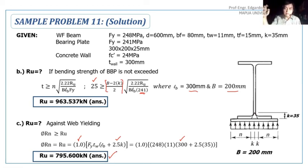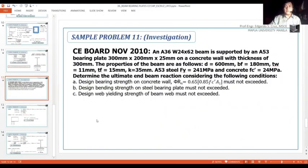These are the Ru values based from the three possible failures. If there's a question asking which is the most critical Ru among the three possible failures, you just have to choose whichever is the smallest among these three values of Ru. That's all for the analysis. That's how it is for analysis or investigation - we solve for Ru or we solve for the design strength based on the given possible failures. I hope you have learned from this discussion. Thank you.